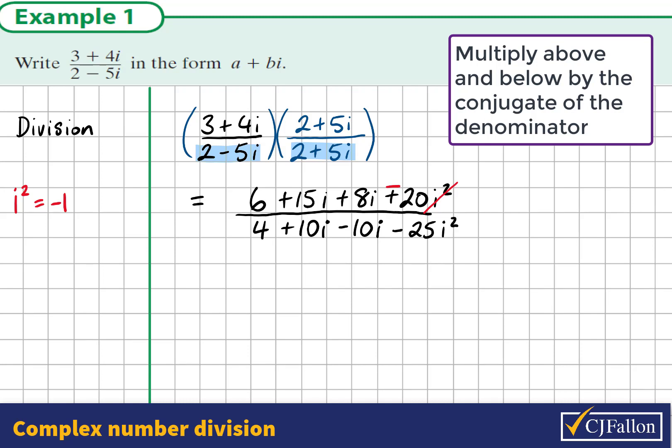We see here that we have a 10i and a negative 10i. So we actually have no imaginary parts because of the difference of two squares. We have an i squared, but remember i squared is negative 1. So negative 25 multiplied by negative 1 becomes positive 25.